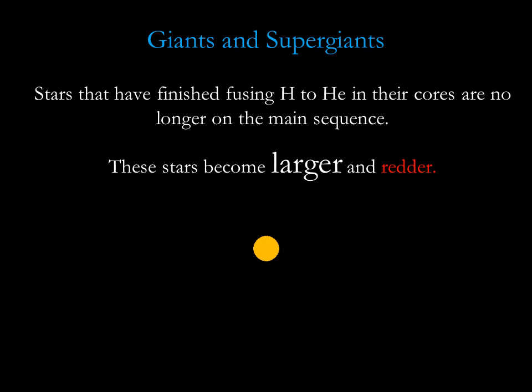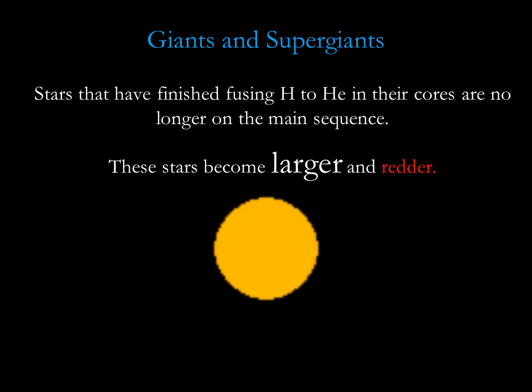Giant and supergiant stars are nearing the end of their lives. They have already exhausted their supply of hydrogen in their central cores. At this point, the stars puff out their outer atmospheres, becoming larger and more red. We will talk about giant stars in more detail soon.